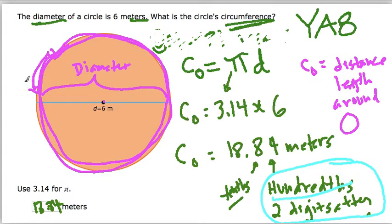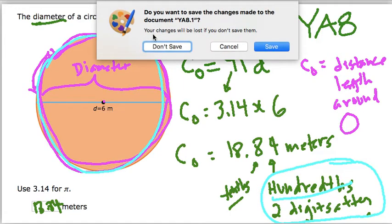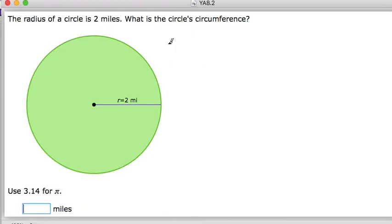And again we're dealing with circumference, that's the distance around. And we know that circumference equals pi times the diameter. So the next question that I'll answer is, what if we're given the radius of the circle and we're asked for the circumference?